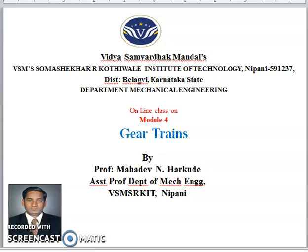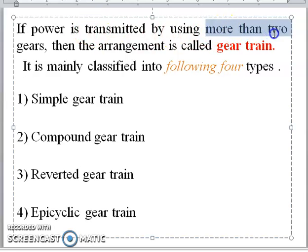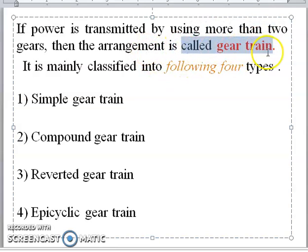The second important topic is what is train value. Now we will discuss one by one. First of all, I will go with the definition of gear train. If the power is transmitted using more than two gears, then the arrangement is called a gear train. It is mainly classified into the following four types.